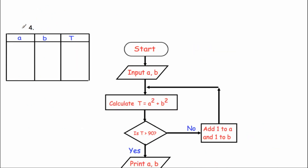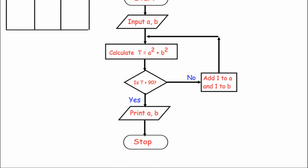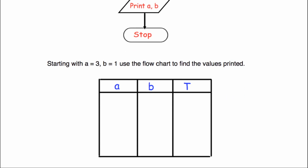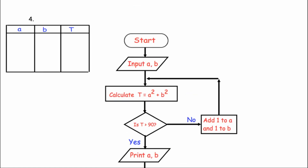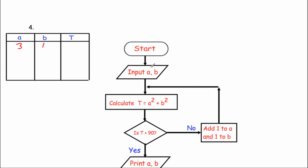Question 4. We start with A equals 3 and B equals 1. We calculate T equals A squared plus B squared: 3 squared is 9, 1 squared is 1, so T equals 10. Is T bigger than 90? No — add one to both A and B: A equals 4, B equals 2. So T equals 4 squared plus 2 squared equals 16 plus 4 equals 20. Is 20 bigger than 90? No — add one again. We continue: A equals 5, B equals 3. T equals 5 squared plus 3 squared equals 25 plus 9 equals 34. Is 34 bigger than 90? No.